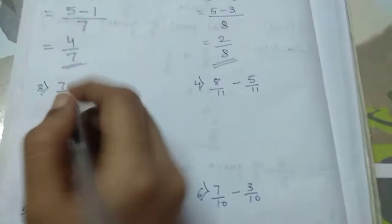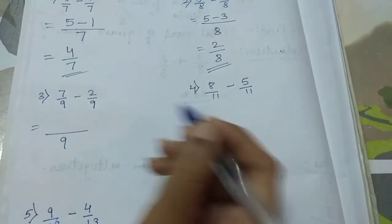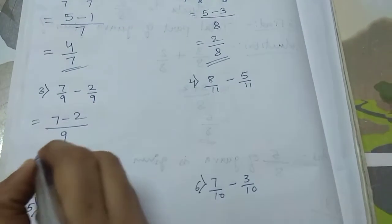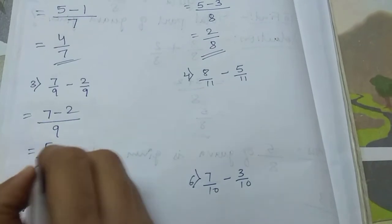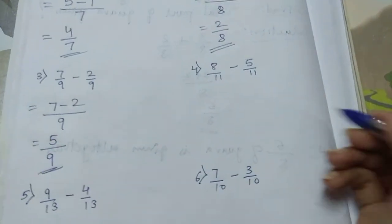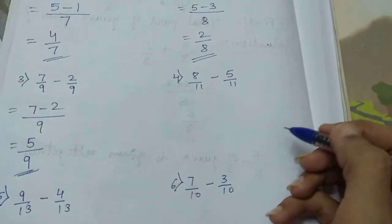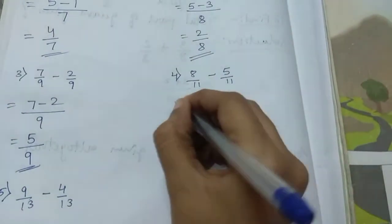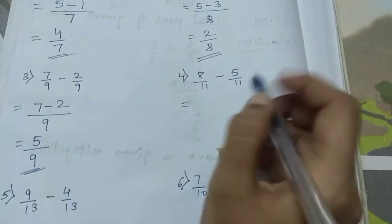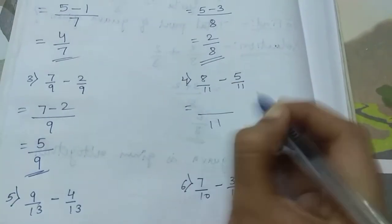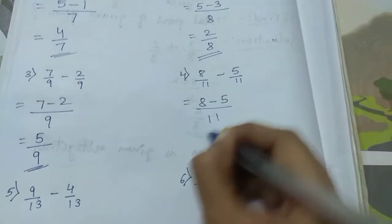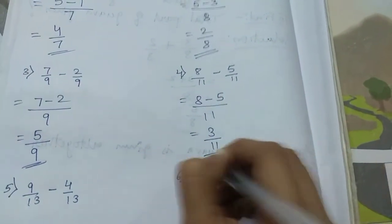Let's see third one. 7 by 9 minus 2 by 9. Again denominator is same. So numerator we will subtract, giving 5 by 9 as answer. Next 8 by 11 minus 5 by 11. Denominators are same. So 8 minus 5 will give us 3 by 11.